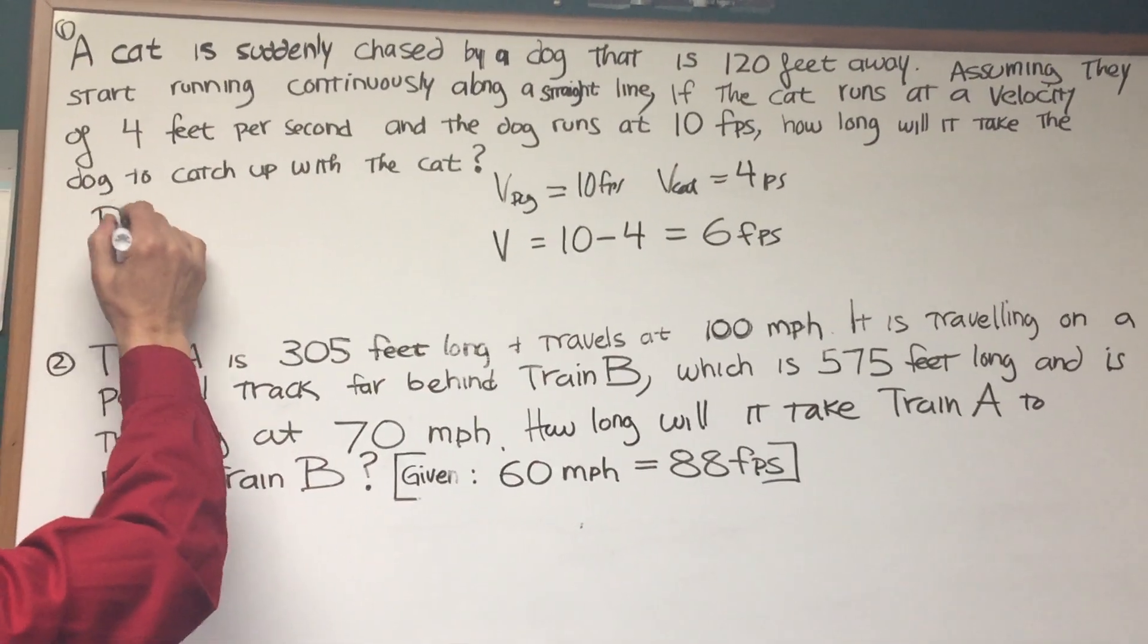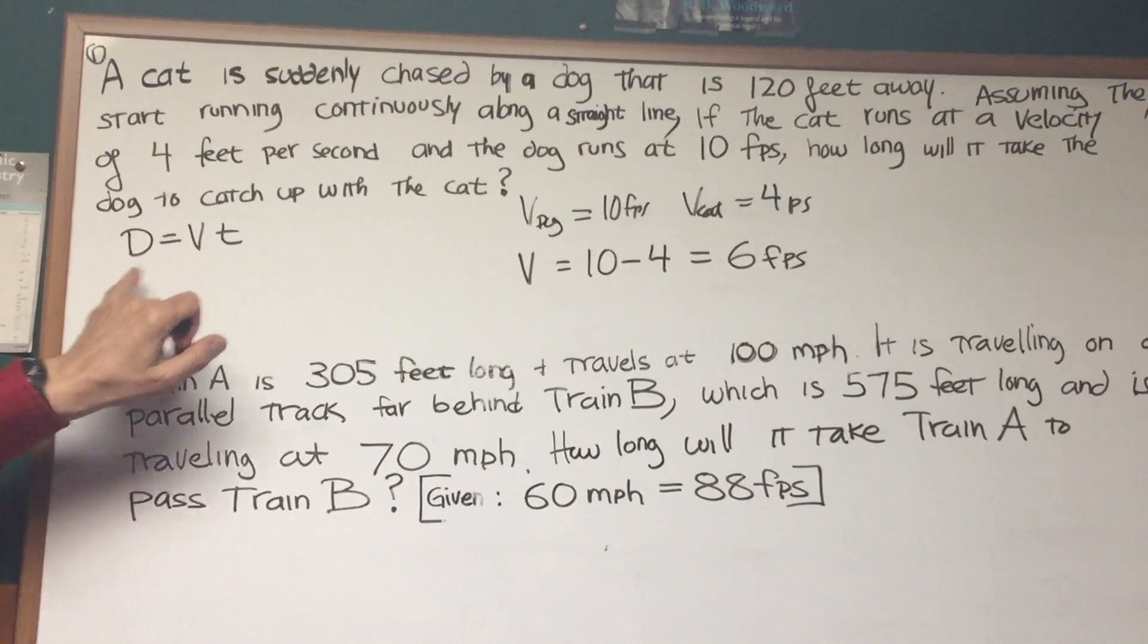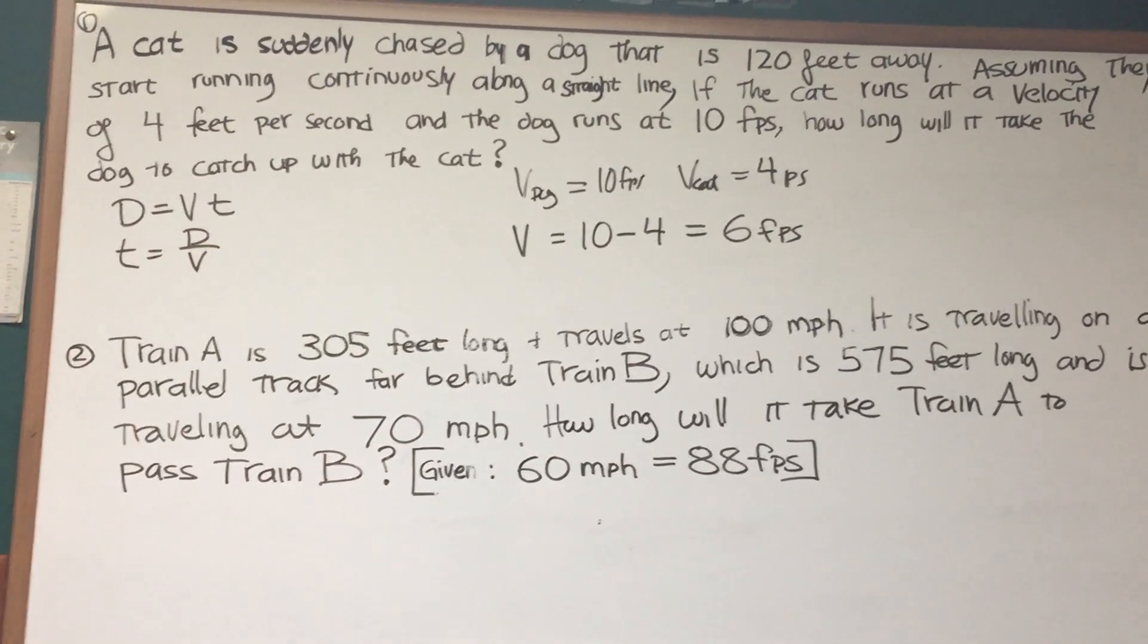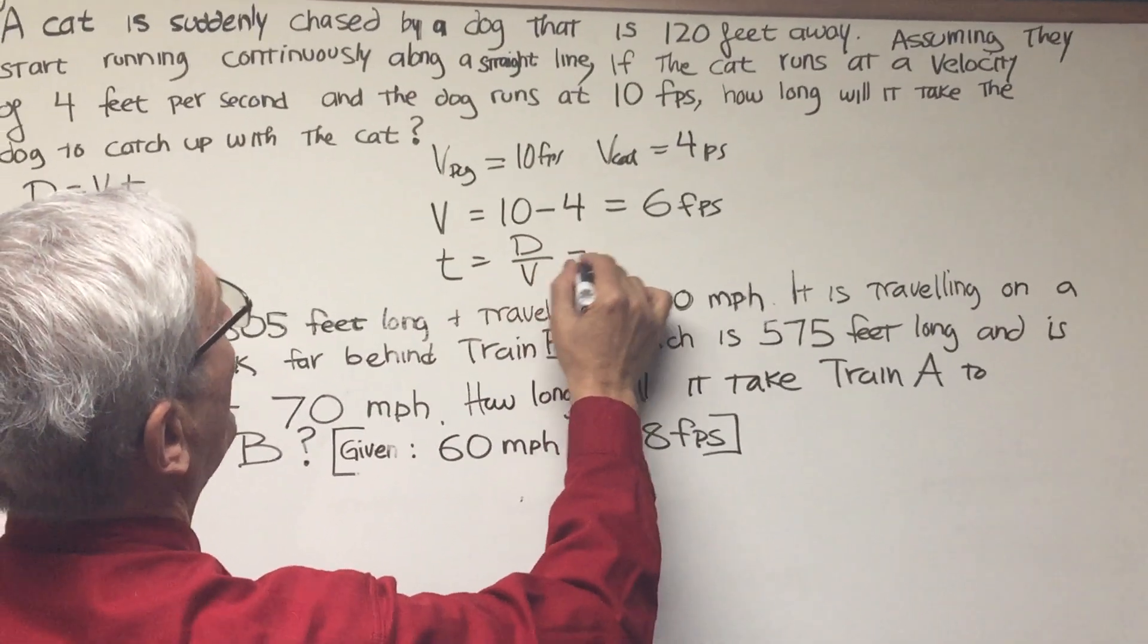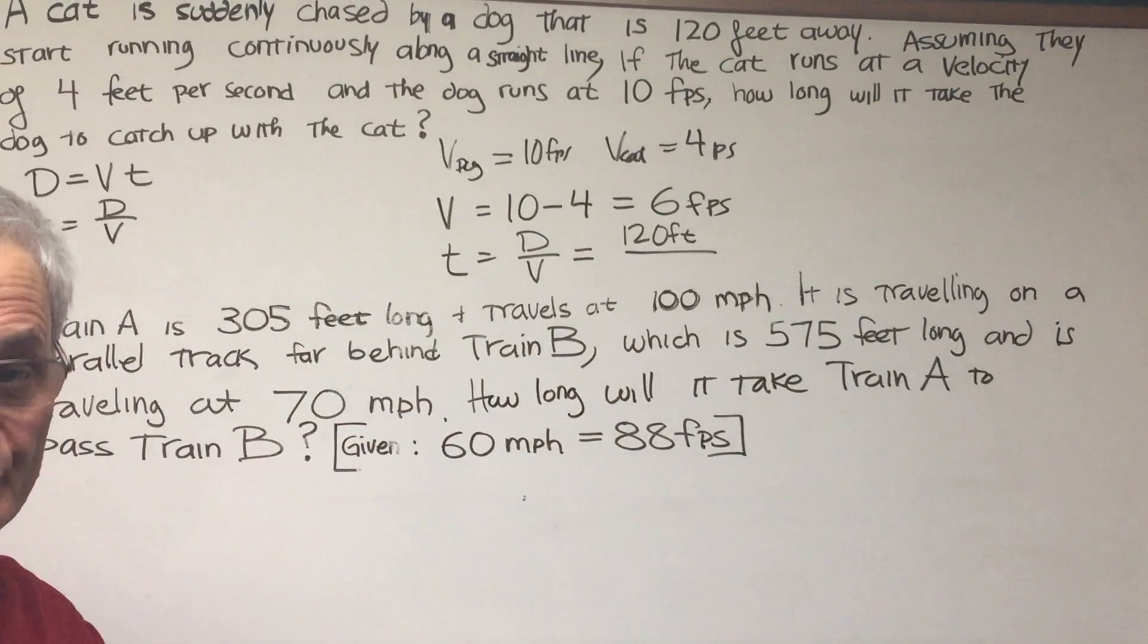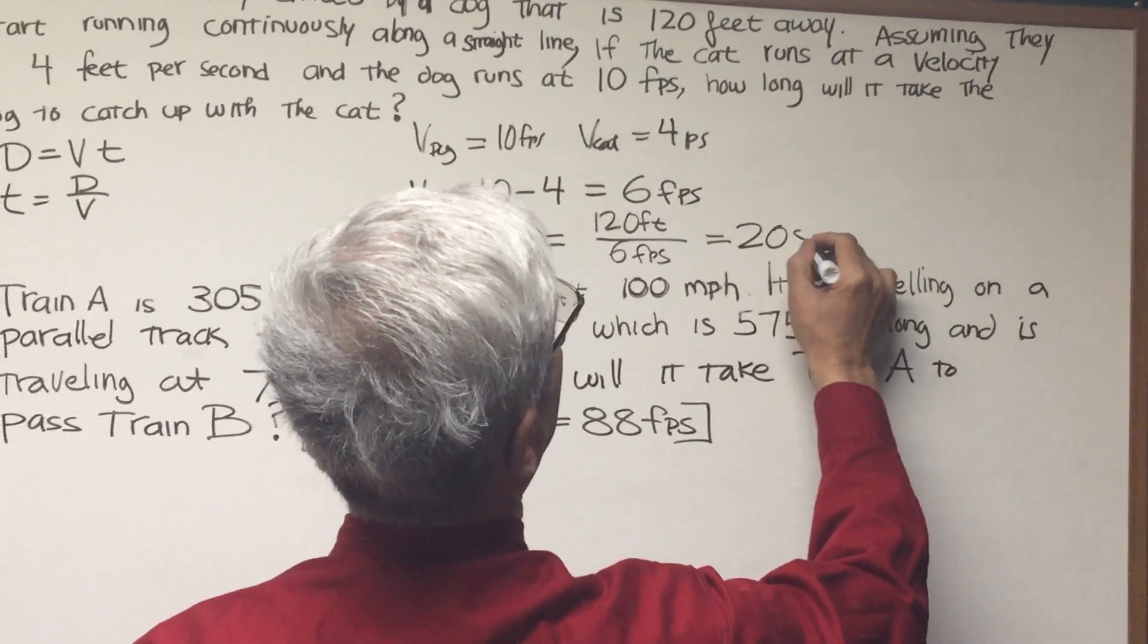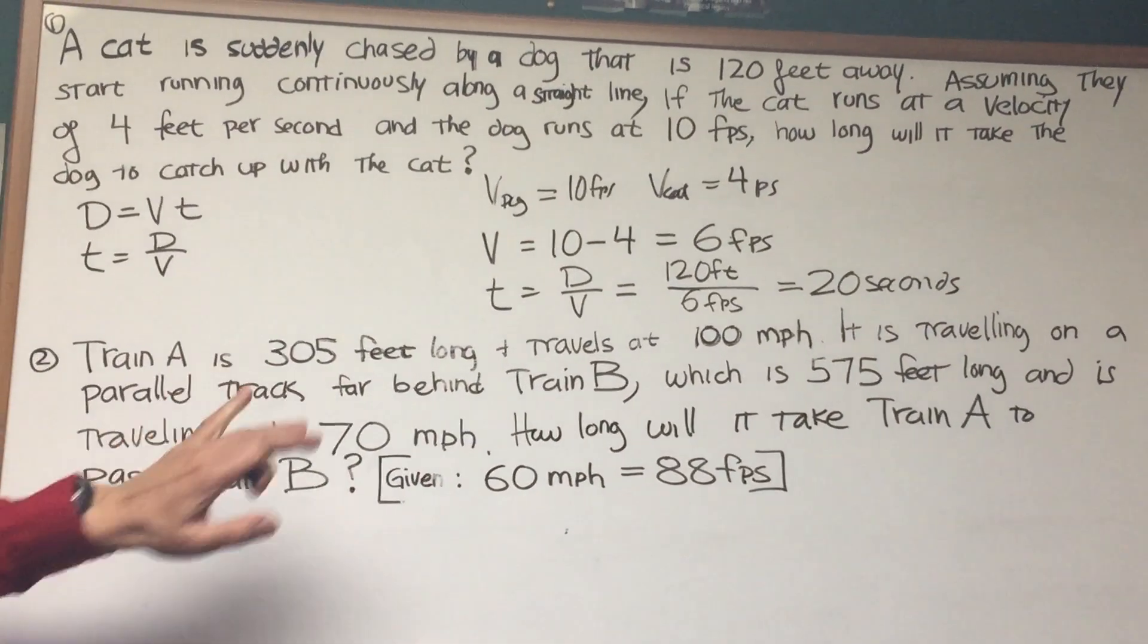We're looking for time, so we're going to revert back to that basic formula: distance equals velocity times time, or the rearrangement time equals distance over velocity. The distance is 120 feet, the velocity is 6 feet per second, therefore 6 divided into 120 is 20 seconds. That's how long it will take the dog to catch up with the cat.